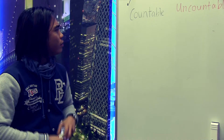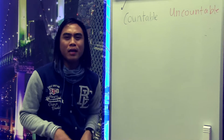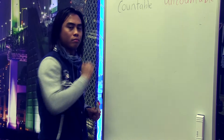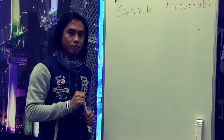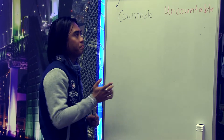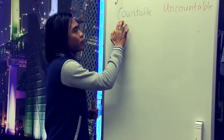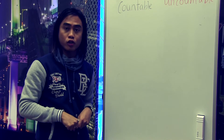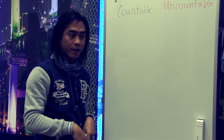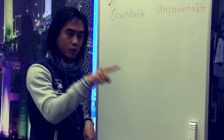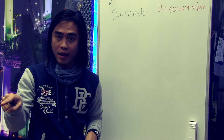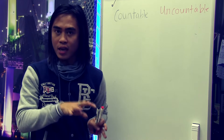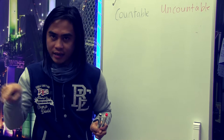So, what do you mean by countable? From the word itself — count. So you can count: 1, 2, 3, 4, 5, 6, 7. So, meaning you can count.